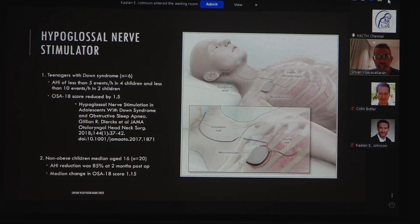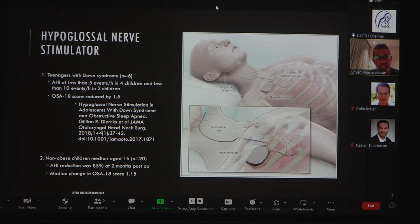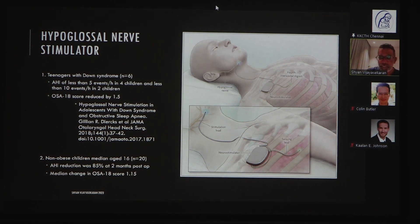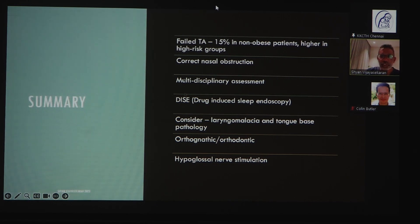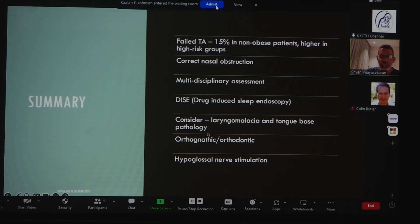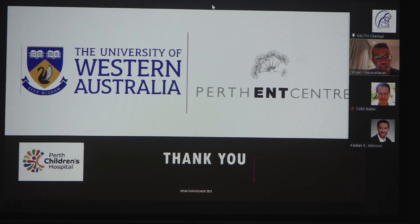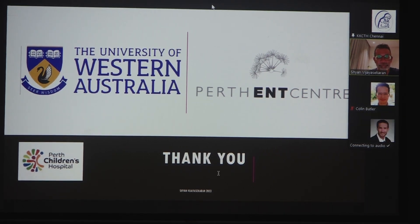Potentially, hypoglossal nerve stimulators may become ubiquitous in treating children with macroglossia or glossoptosis. There have been trials in teenagers with some success, and a multi-center study is currently ongoing looking at OSA resistant to adenotonsillectomy. In summary, in the failed OSA adenotonsillectomy group — 15 percent in non-obese patients, higher in high-risk groups — we should correct nasal obstruction, do multidisciplinary assessment, consider DISE-directed surgery, address laryngomalacia and tongue-base pathology, refer to an orthodontist or orthognathic surgeon, and in the future consider hypoglossal nerve stimulation. Thank you very much for your time and the invitation to speak today.